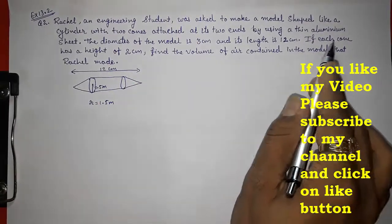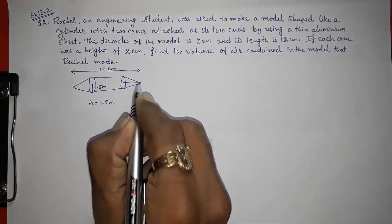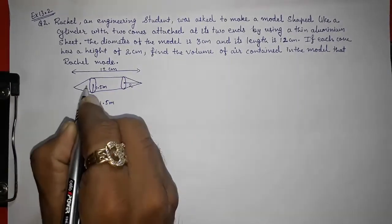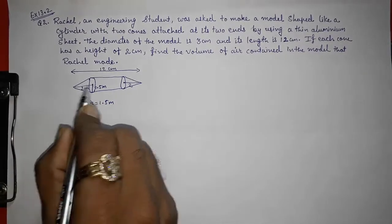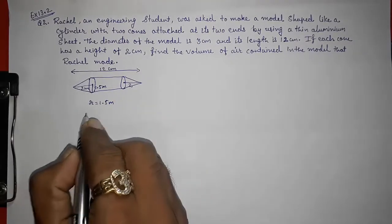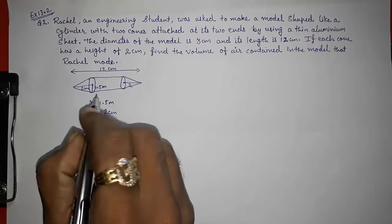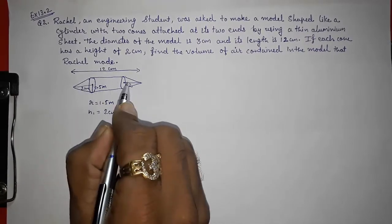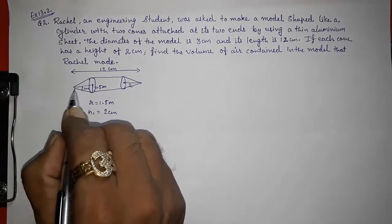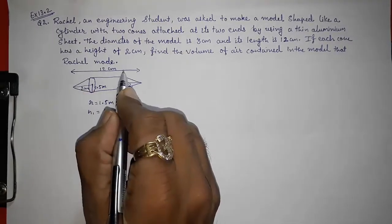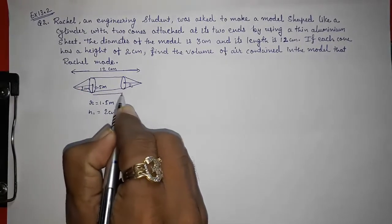Now, what we want. If each cone has a height of 2 cm, means this height, this is 2 cm. From here also, this is 2 cm. So these two heights, you can take this height as h1, 2 cm. And we want the height of the cylinder. If this total is 12, then 2 cm on this part and 2 cm on this part. So 2 cm here, 2 cm here. So what will be the height of this cone?